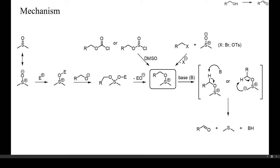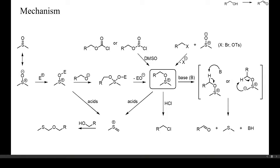In the presence of weak bases, alkoxydimethylsulfonium salts will fragment into dimethylsulfide and aldehyde, as shown here. This elimination can also be induced thermally. Thus, heating an alkyl halide or sulfonate with DMSO can yield aldehydes directly, in the so-called Cornblom oxidation. In the presence of acids, however, alkoxydimethylsulfonium salts are sometimes converted into alkyl halides or methyl-thiomethyl ethers. These are common by-products of alcohol oxidations with DMSO.